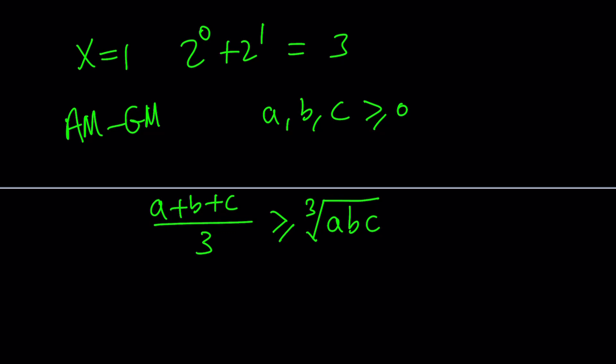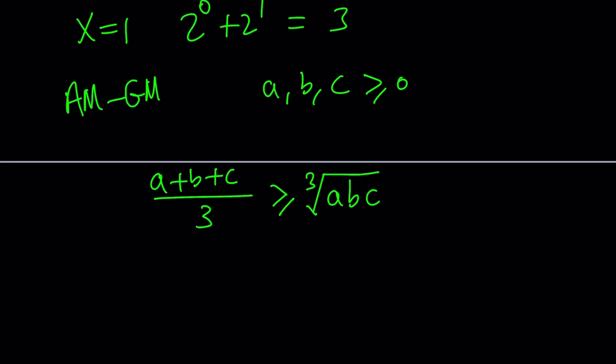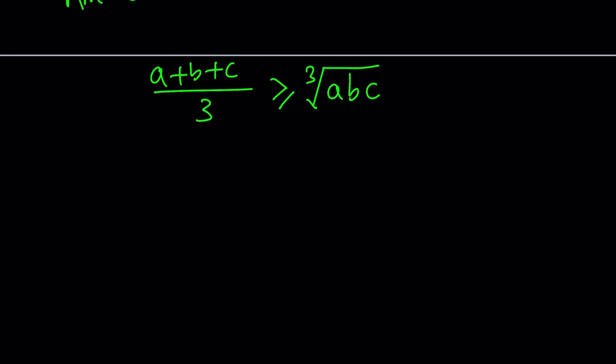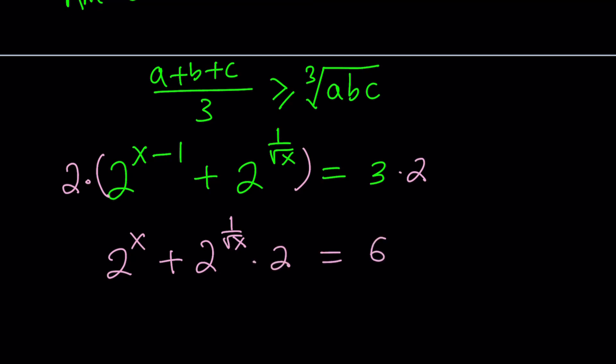So, how do we apply it to our situation? We kind of have like a weird situation here because we have 2 to the power x minus 1, which brings a fraction into the equation. So, we don't want that. To avoid it, we're going to go ahead and multiply both sides by 2. We get rid of the negative exponent. And now, this gives us 2 to the power x plus 2 to the power 1 over square root of x times 2, equals 6.